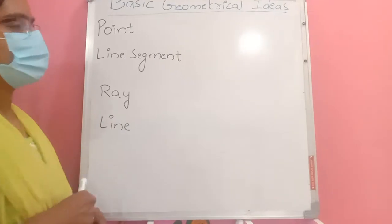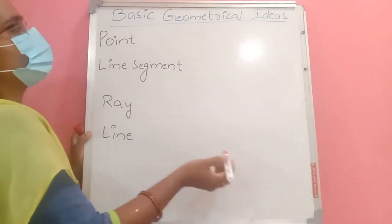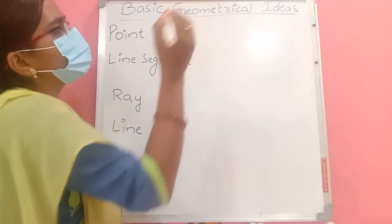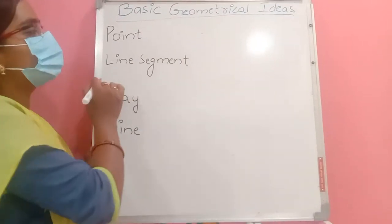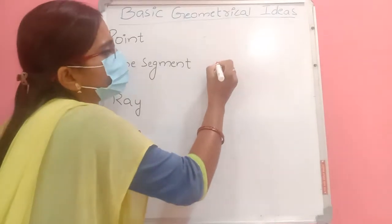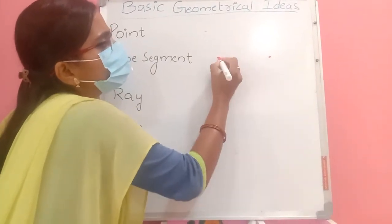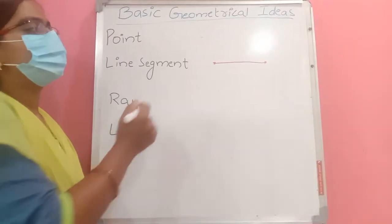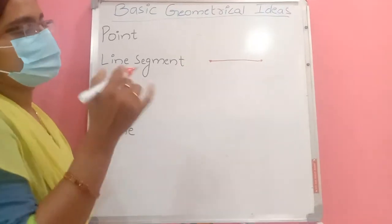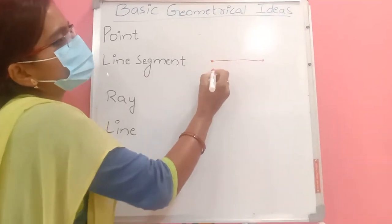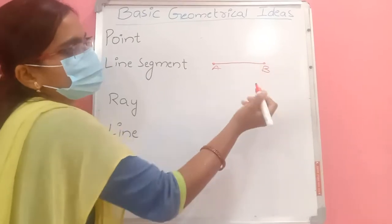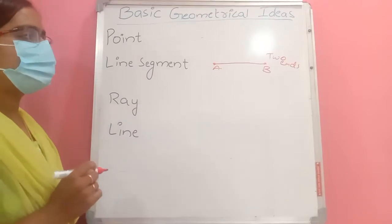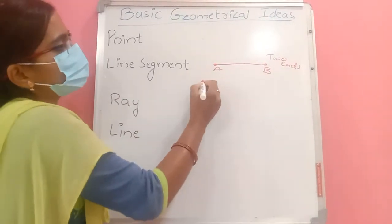The first term is point. If we keep a dot on a paper or on a board, that is called a point. Line segment means the length between any two points. That line is called a line segment. It has two ends — it ends here and it ends here. That is line segment AB.